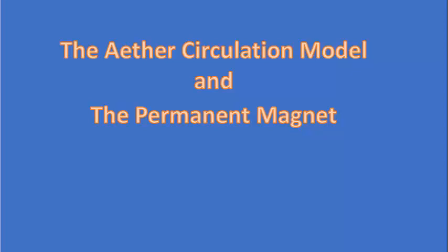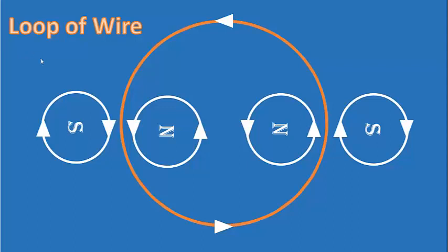Today we're going to talk about the ether circulation model in terms of the permanent magnet. In the previous video I showed you how a loop of wire affects the surrounding ether. If you have a loop of wire with current flowing in a counterclockwise fashion, you get north circulation on the inside of the coil and south circulation on the outside. These ether circulations are extremely exaggerated in the diagram — they're going on everywhere inside and outside the coil. This is just a schematic representation of what's going on.